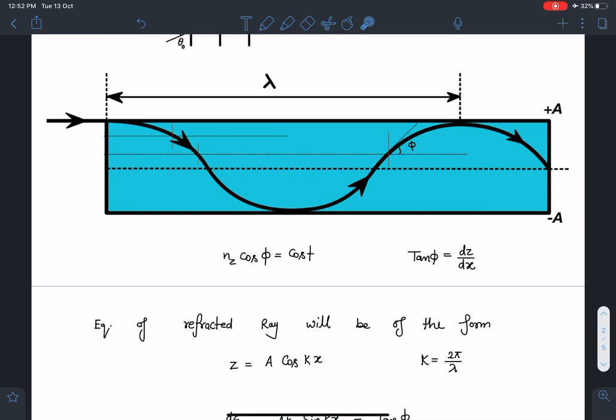Now from here since it is cosine function and x equal to 0 value is maximum, I can definitely take that this z is a cos kx where a is the maximum value of z which is plus a in this case. So x equal to 0 value is maximum, it is satisfying that.